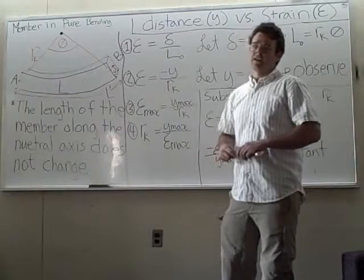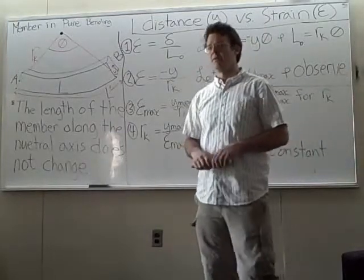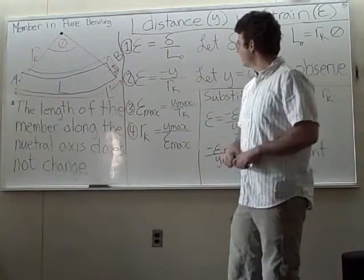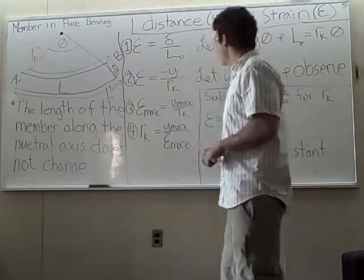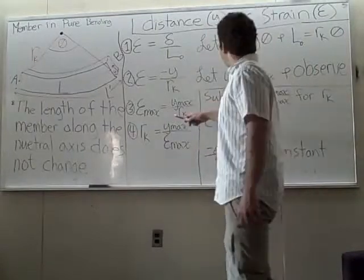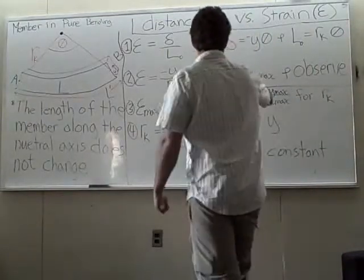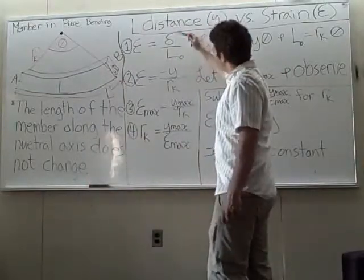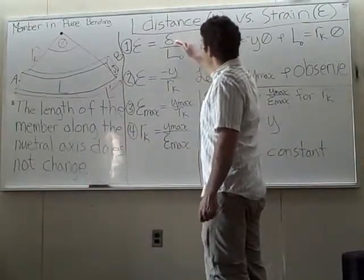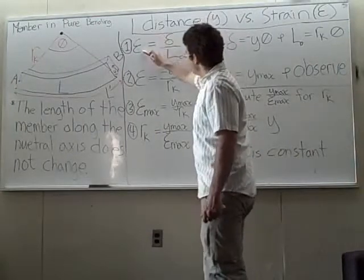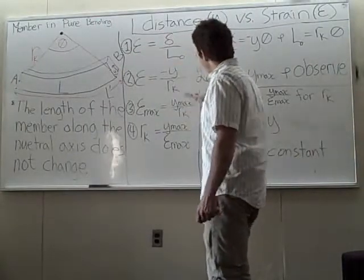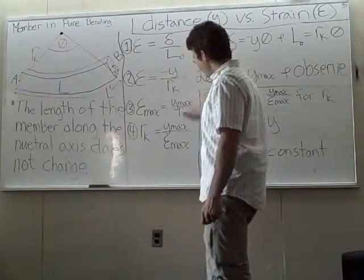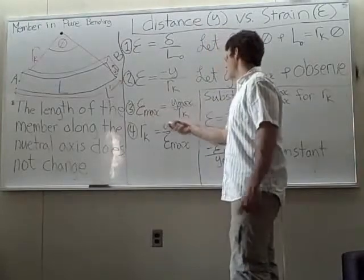If you just try to memorize the final equation, that's a little more difficult and there's a higher chance for error. So by letting y equal y_max, we observe that the deformation is going to be higher, which means the strain is going to be higher. By letting y equal y_max, we confirm that the strain is at its maximum.